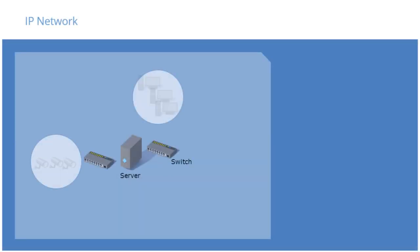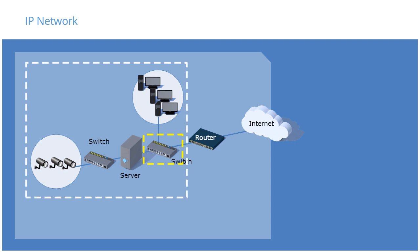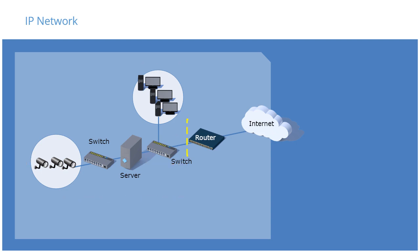For simplicity's sake, we'll represent the two LANs like this. Many Milestone systems connect to the Internet. To do so, they must connect to a router or firewall through the default gateway. While a switch connects devices or hosts together in a network, a router connects networks together, forwarding data based on their destination IP addresses.